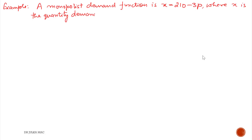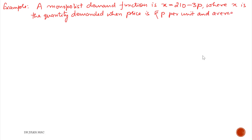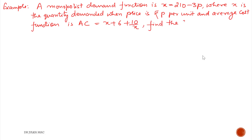Next example. A monopolist's demand function is x = 210 − 3p, where x is the quantity demanded when price is p rupees per unit, and the average cost function is AC = x + 6 + 10/x. Find the consumer surplus.